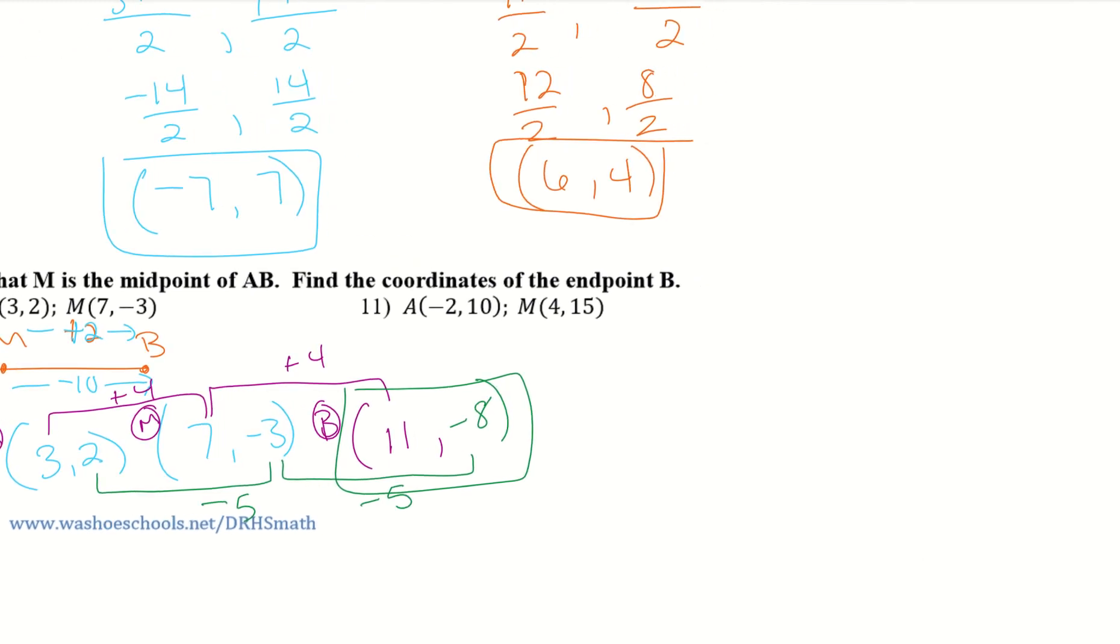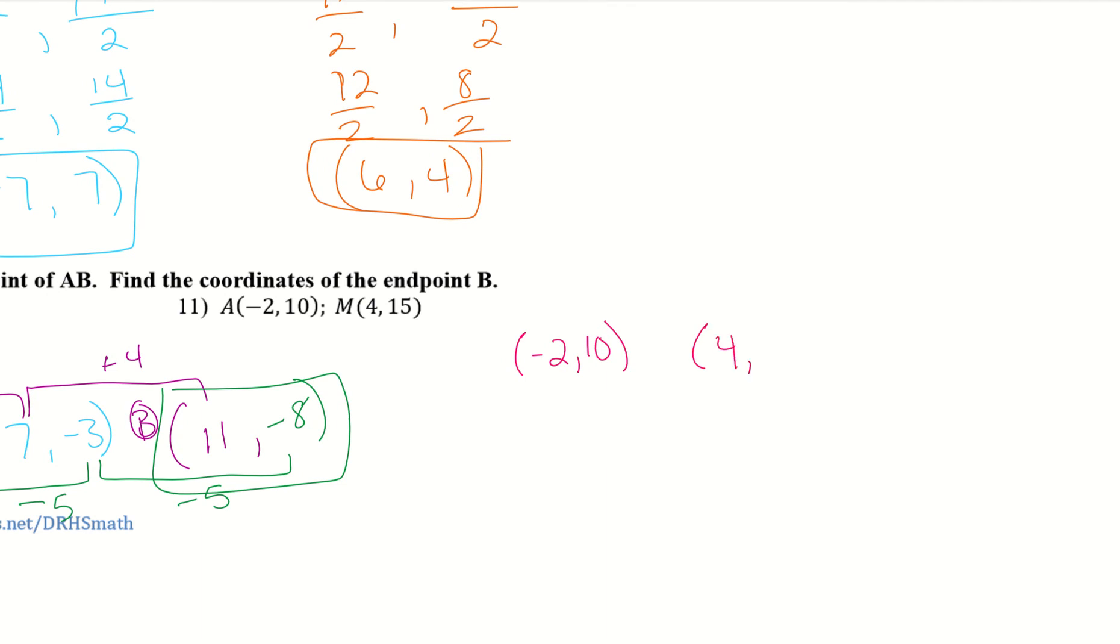Let's try number 11. So I'm going to rewrite them again just so I have that extra room like I did with number 10. So I have my A value, and I have my midpoint, and I'm trying to figure out my B. So from negative 2 to 4, I am adding 6. So that means from my midpoint to my B value, I also have to add 6, which will give me 10. So 4 plus 6 equals 10. And then for my y's, I'm adding 5. And over here, I have to add 5 again. So now I have 20. And there is my endpoint B. So since we have that midpoint, we know that's going to be the same for both times.